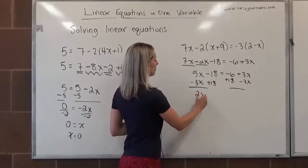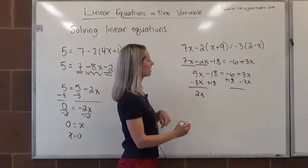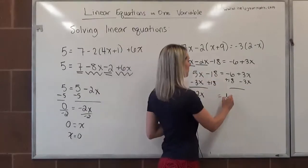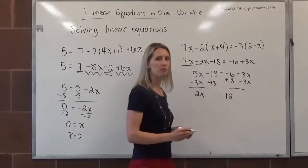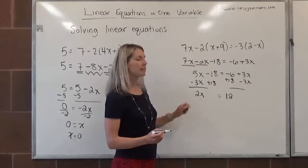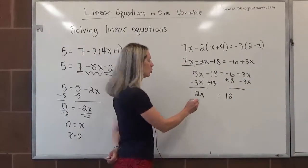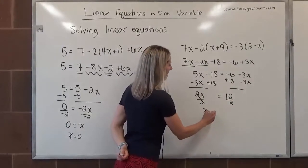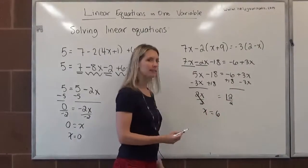5x minus 3x is 2x. Negative 18 and positive 18 is 0. Negative 6 plus 18 is 12. 3x and negative 3x is 0. To get x totally by itself, it's being multiplied by 2. I will divide both sides by 2, and we get our final solution is x equals 6.